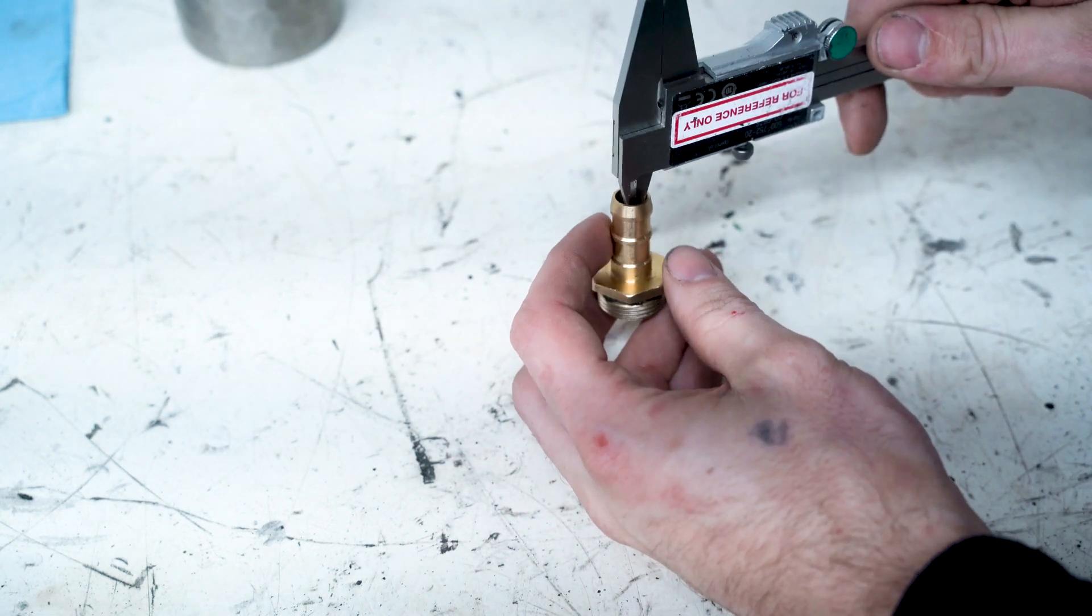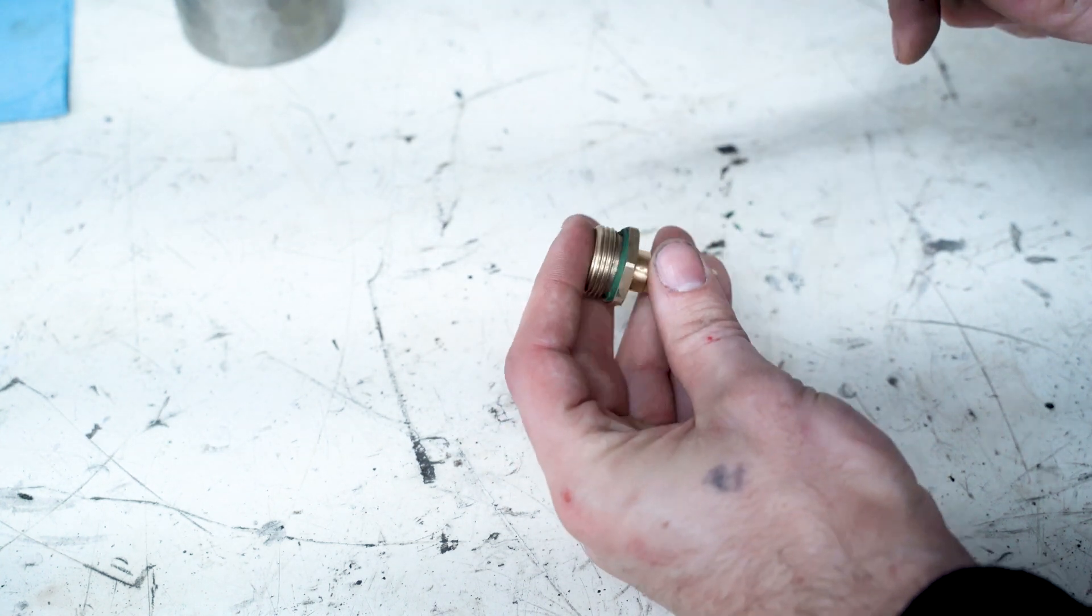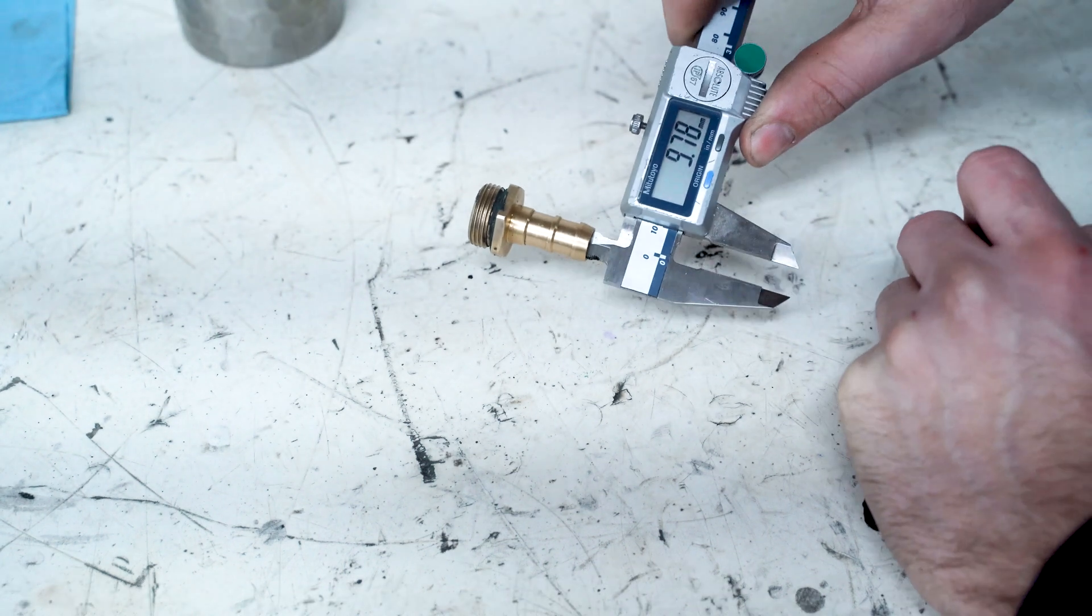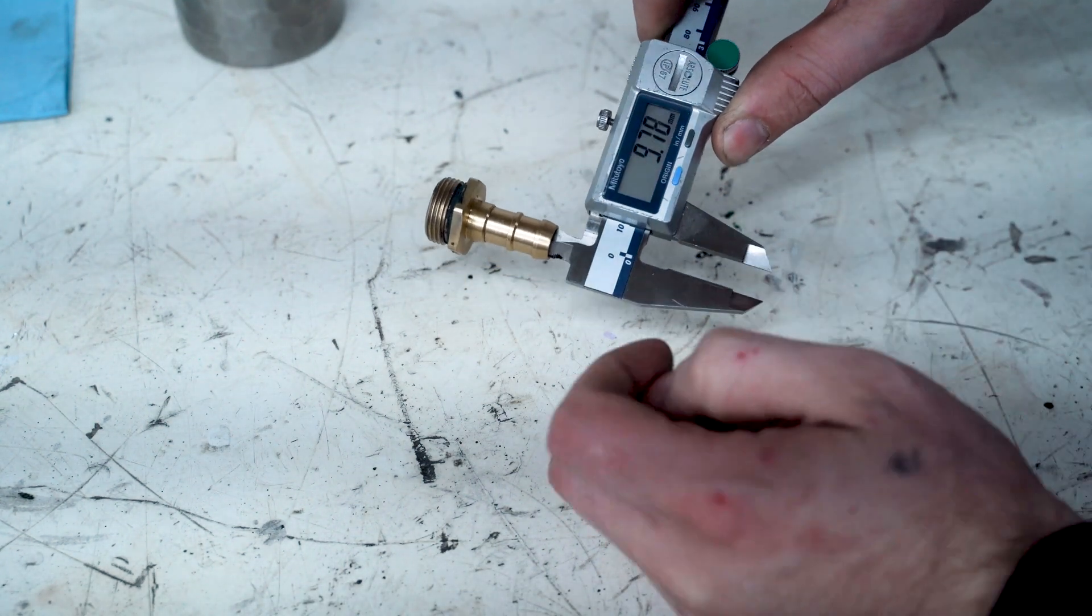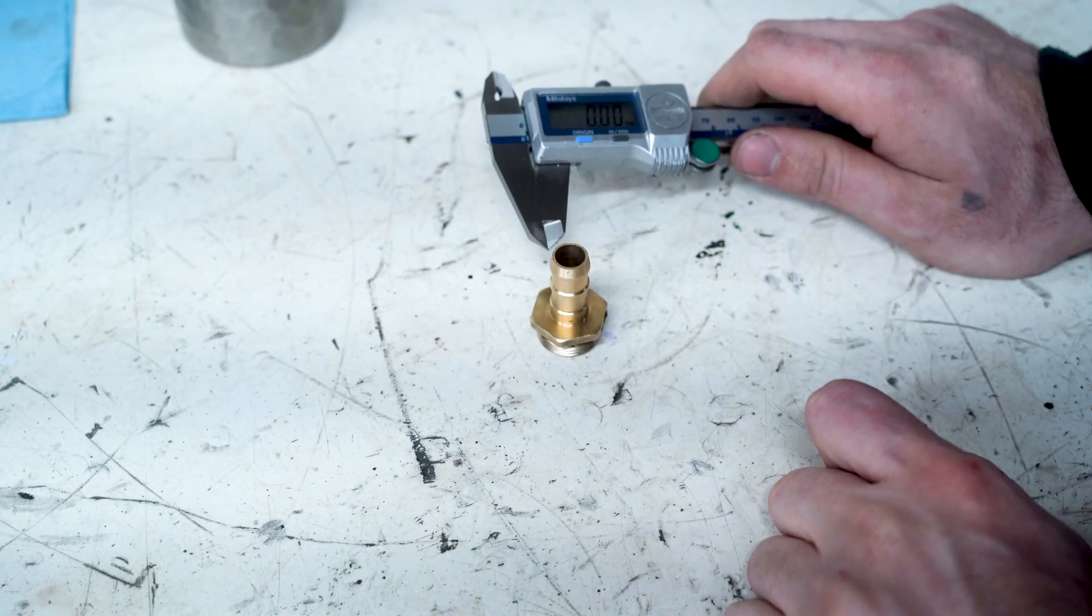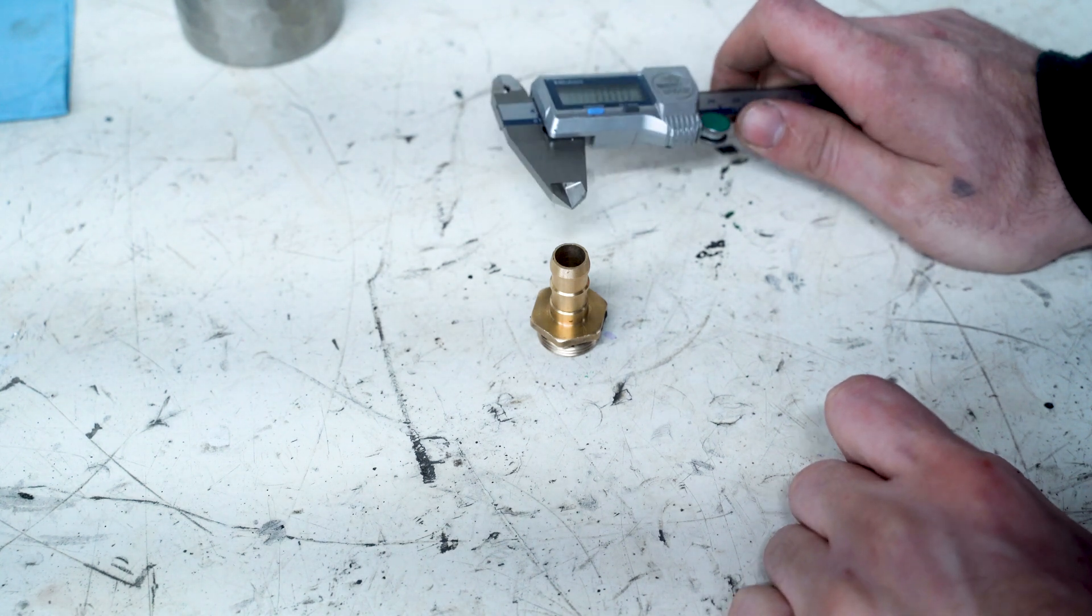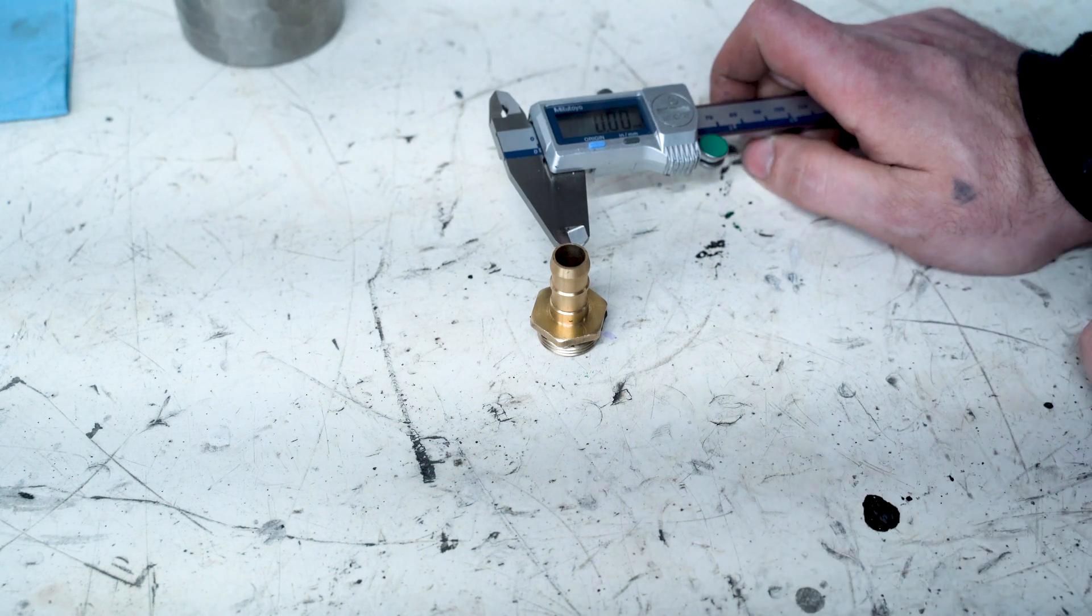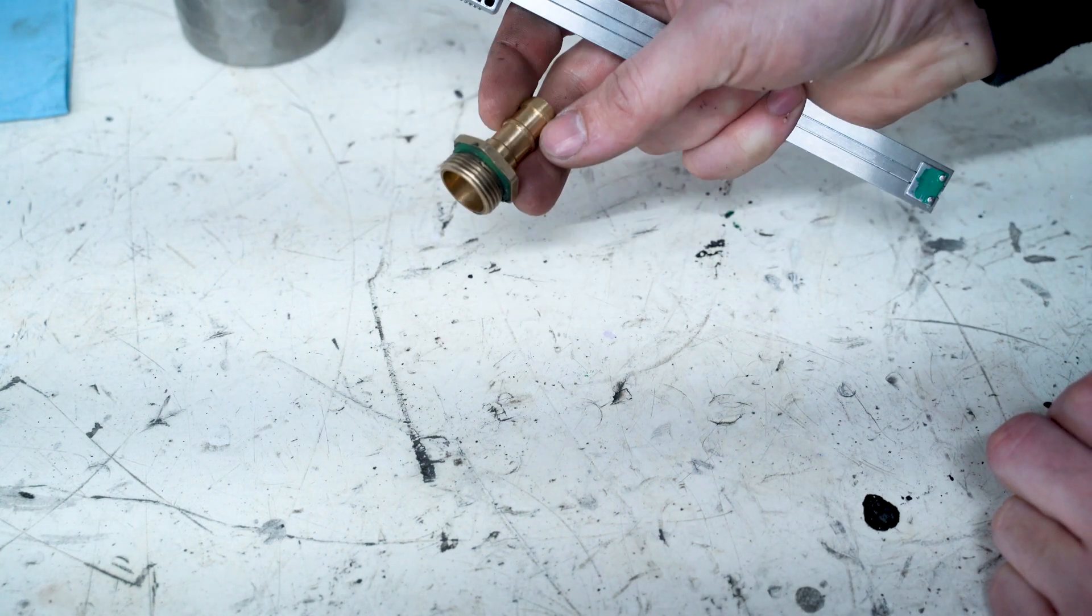...that the inside diameter of this is a whole lot smaller than the original. This measures close to 10 millimeters, and the original one is like 17 and a half, 18 maybe. The one I have is really rough, so I'm not sure what it originally was—probably 18.